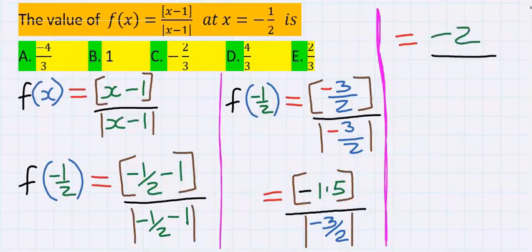And at the denominator, we have minus 3 over 2, enclosed in absolute value function. Absolute value function rejects negative. And at the denominator, you're going to have only 3 over 2, without the negative.